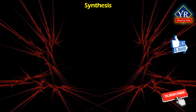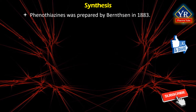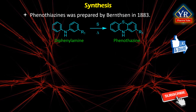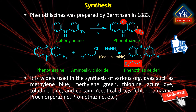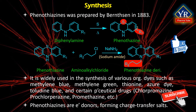Use of phenothiazines has been associated with anti-phospholipid syndrome but no causal relationship has been established. Synthesis of phenothiazine: Phenothiazine was first prepared by Benson in 1883 via the reaction of diphenylamine with sulfur, but more recent synthesis relies on the cyclization of two substituted diphenyl sulfides. Phenothiazine derivatives can be prepared by alkylation of phenothiazine with various aminoalkyl halogens by means of sodium amide. Phenothiazine is also widely used in the synthesis of organic dyes such as methylene blue, methylene green, thionine, azure dye, and toluidine blue, as well as pharmaceutical drugs including chlorpromazine, prochlorperazine, and promethazine. Phenothiazines are electron donors forming charge transfer salts with many acceptors.